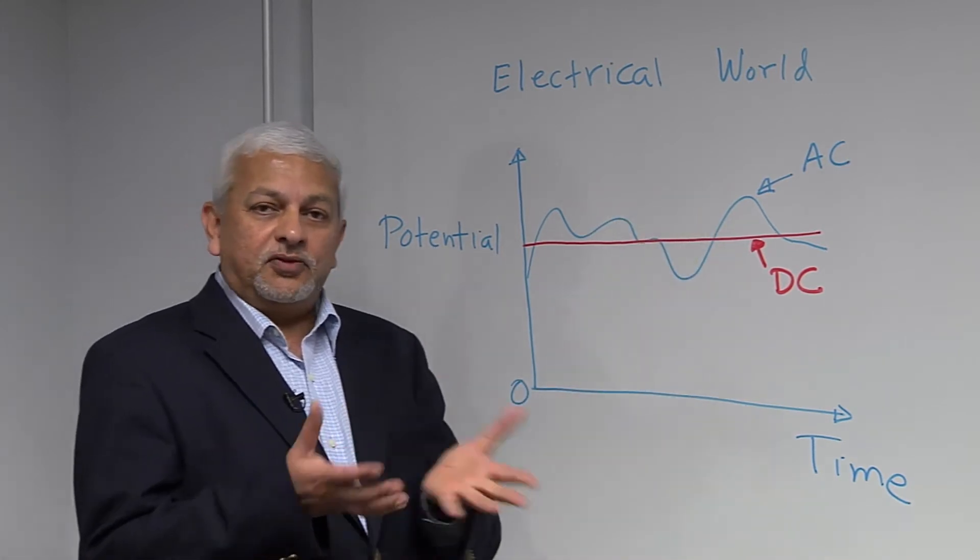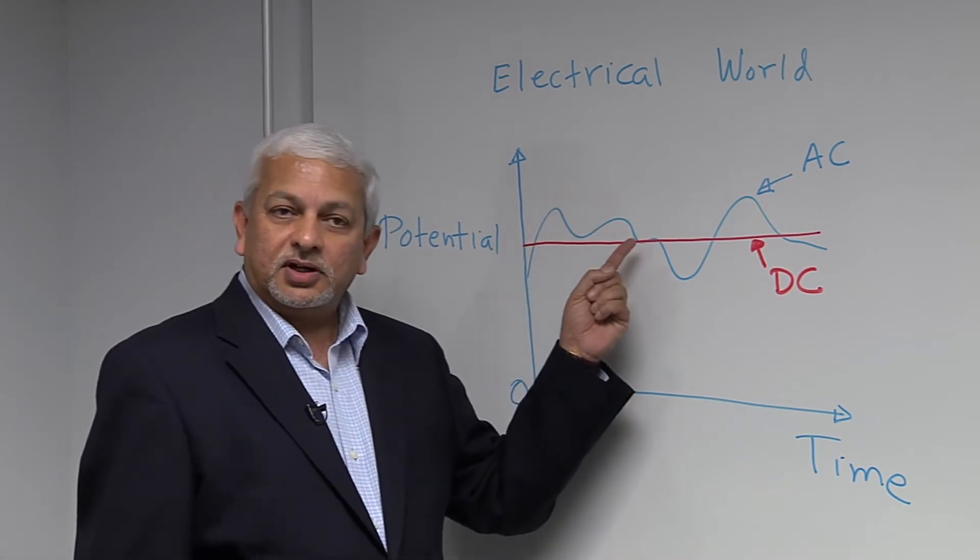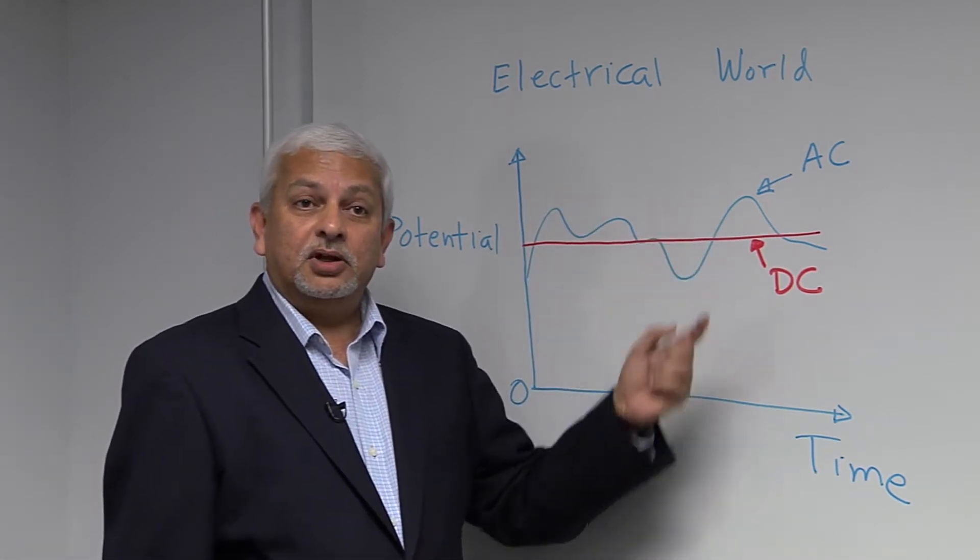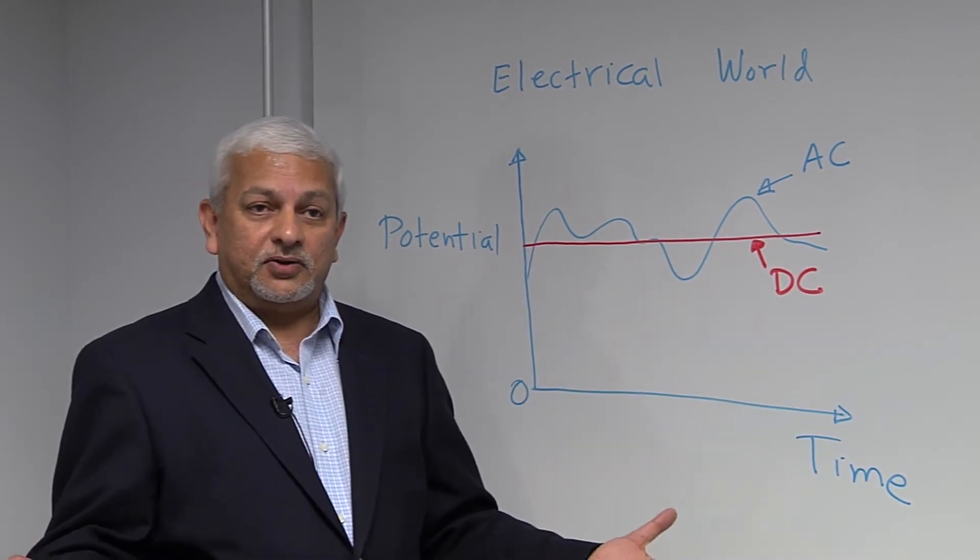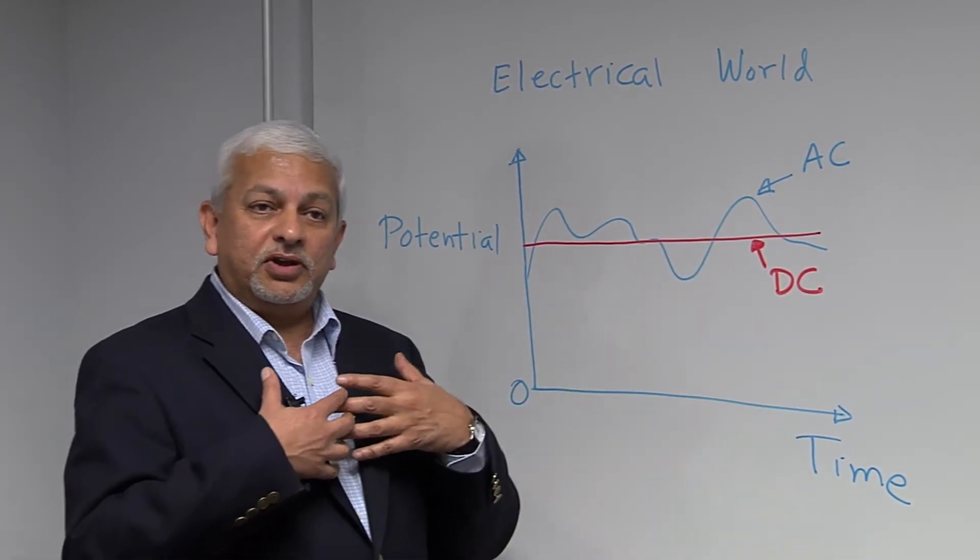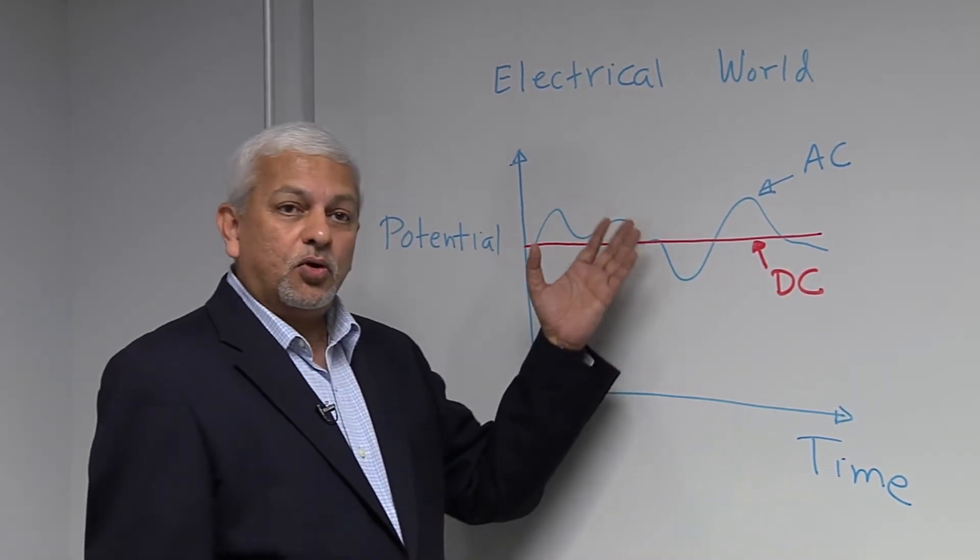When we look at information in an electrical signal, the information is always contained in the thing that is going up and down. If the potential was always constant, that carries no information for us. So if you want to convey information using electrical signals, then they do have to go up and down.